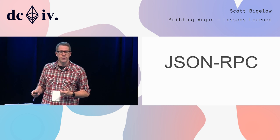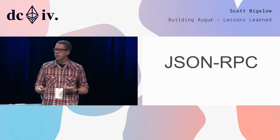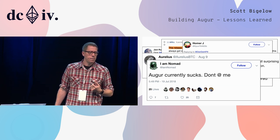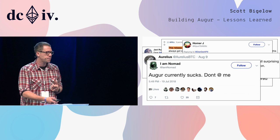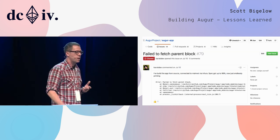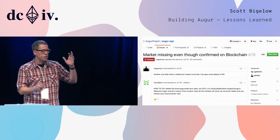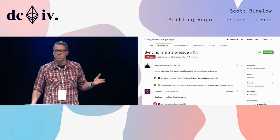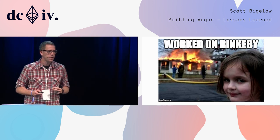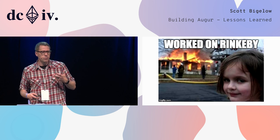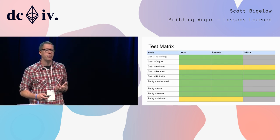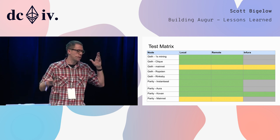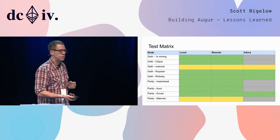Let's talk about JSON-RPC. One of the nice things about deploying your software is that you get a chance to get some real user feedback. We received actionable GitHub issues: failed to fetch parent block, stuff is missing, balances are gone, things are shutting down, syncing is a major issue. From our Docker image repository, we took testing very seriously — we tested Infura, we tested local and remote and POA. We tested the whole thing. But in the end, we had an issue that was specific to Infura and specific to mainnet.